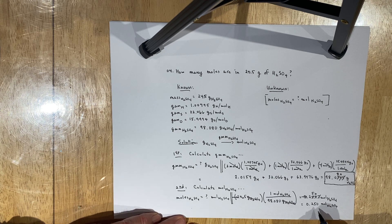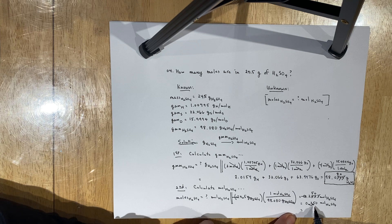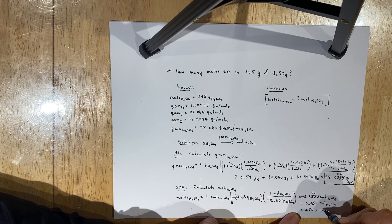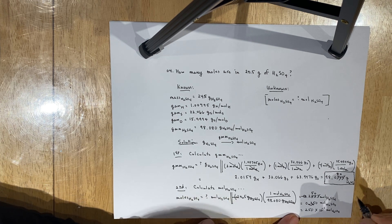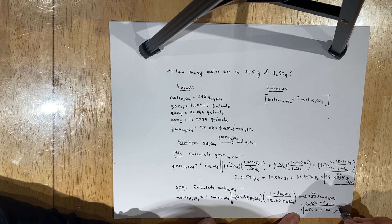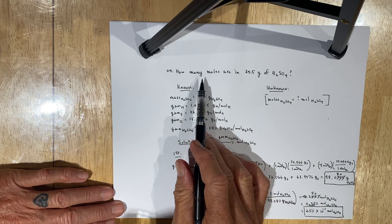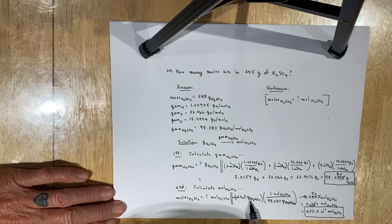Now that we've corrected for significant figures, convert to scientific notation by moving the decimal place one place to the right between the first two non-zero digits. In doing so, you're making the number 10 times larger, so the exponent must be 1 power of 10 smaller. The final answer is 2.50 × 10⁻¹ moles of H₂SO₄. Box this as the complete final answer. That's how you convert grams of H₂SO₄ to moles using gram molecular mass as the bridge.